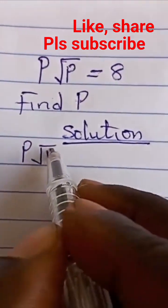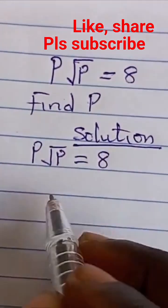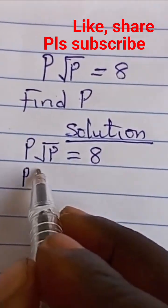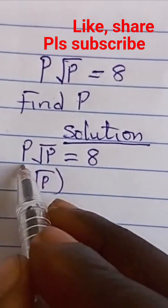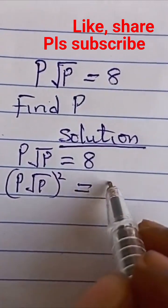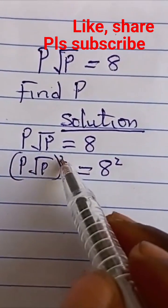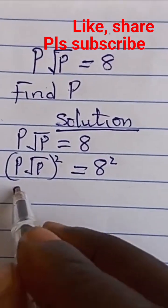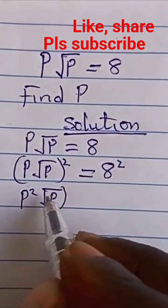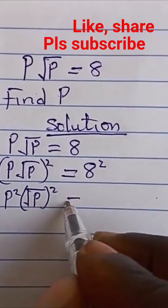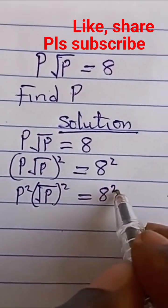Let's solve this: P√P = 8. We square both sides to get (P√P)² = 8². The square affects both the P and the square root, giving us P² multiplying √P² equals 8 raised to the power of 2.